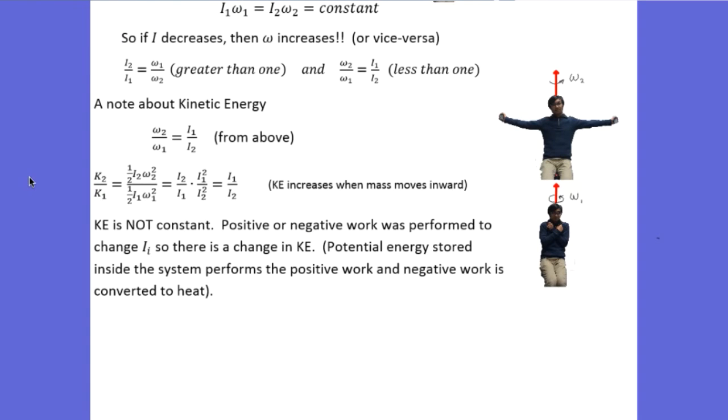An interesting thing happens with kinetic energy, however. We'll set up a ratio of the kinetic energies of the two situations. And if kinetic energy were to be conserved, then we know this ratio would be one. So the kinetic energy of situation two is one-half I omega squared and situation one is also one-half I omega squared. But if we use our expression that says the angular momentums are equal and cross-multiply, we can replace this omega2 over omega1 with I1 over I2. And this expression becomes this then and it simplifies to this, which we know is not one.